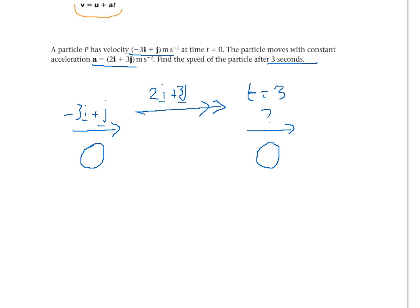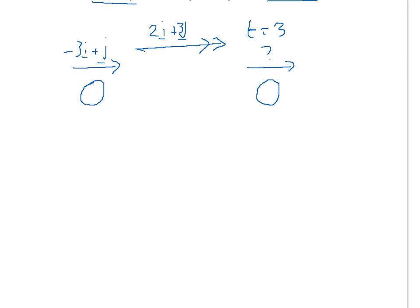Right, now we're going to use the SUVAT equation which involves everything apart from s. So let's just write down SUVAT and put in the bits of information that we know. So we know the time is 3 seconds. We know the acceleration is 2i plus 3j. We're trying to find the final velocity. We know the initial velocity is minus 3i plus j. We are not using s.